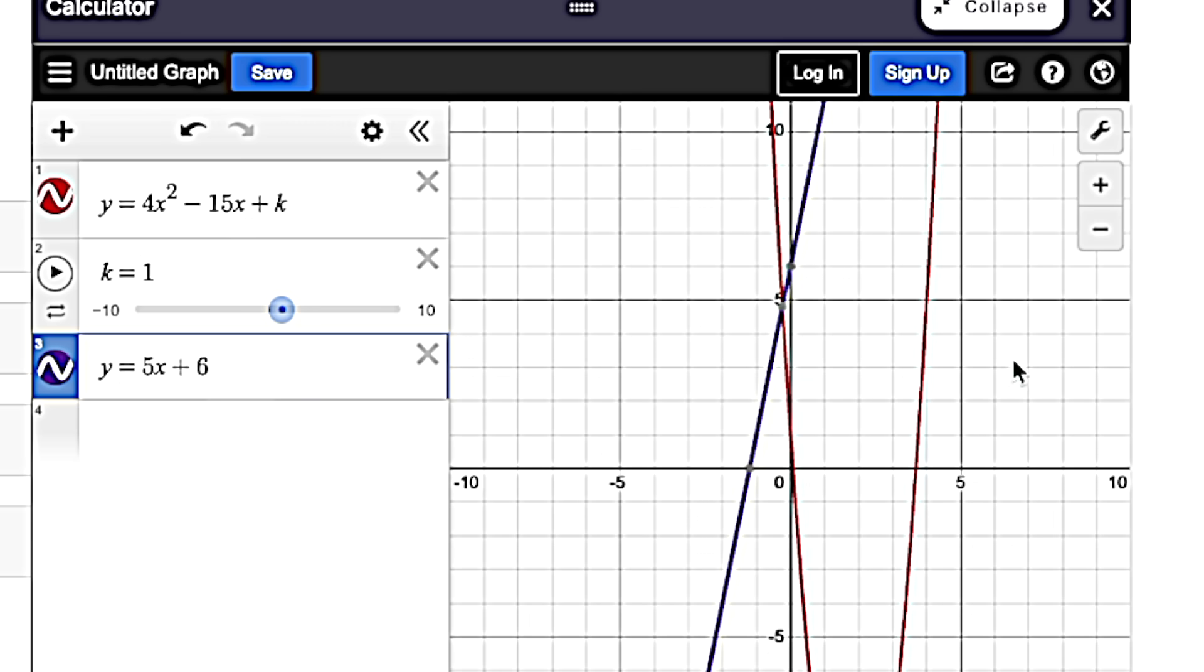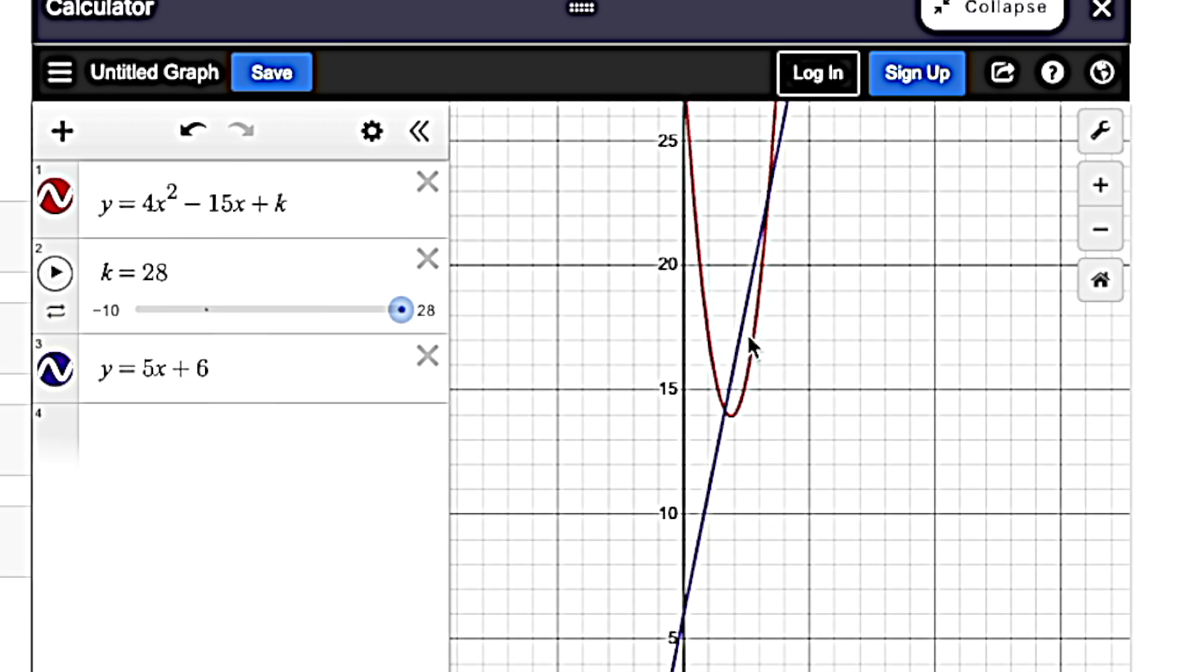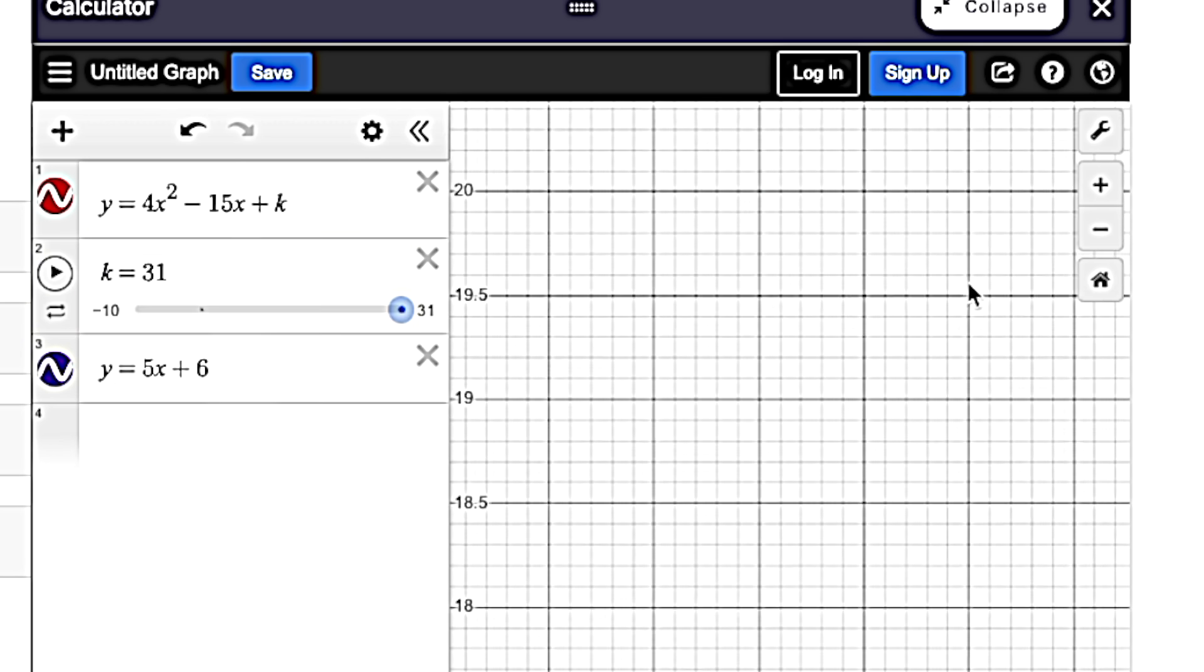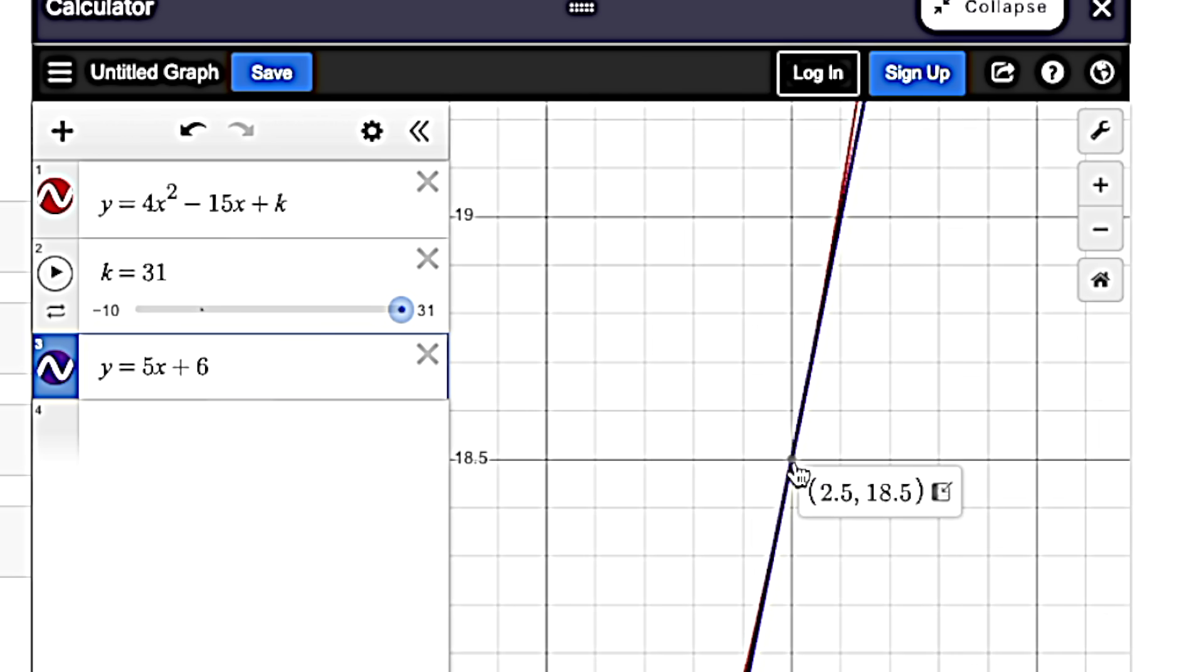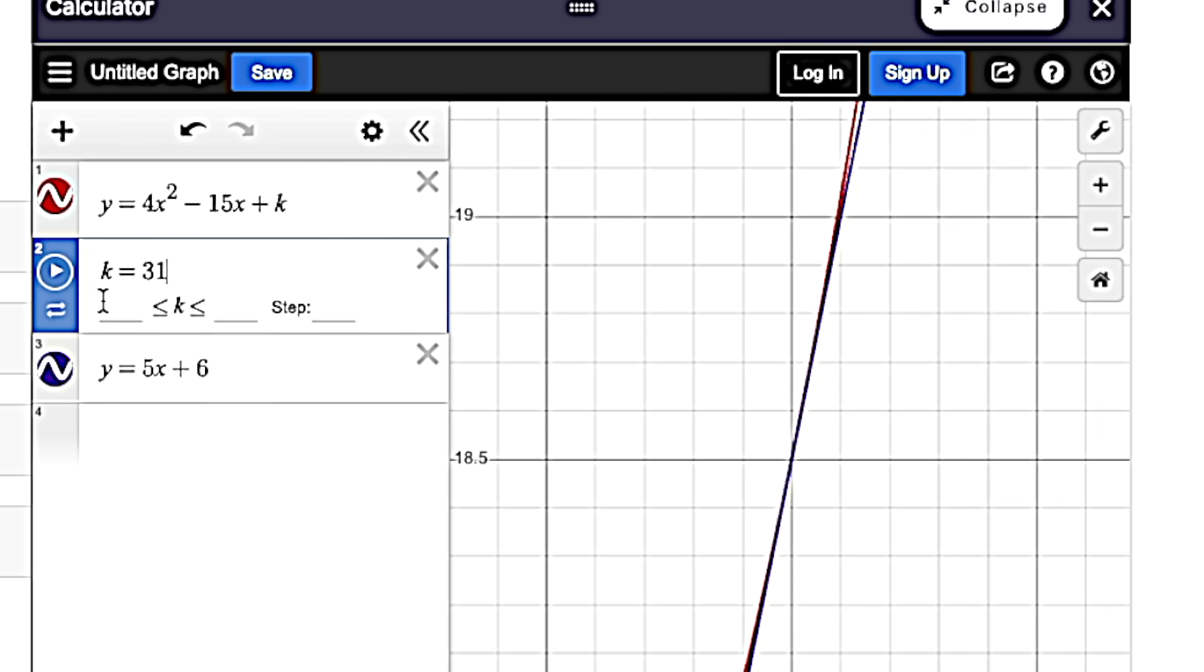And since we want one solution, we need to plug in our answer choices for k. And then visually, we will see when there's only one solution. So if we put in 28, you can see that we have two solutions still. 30 doesn't work. 31 is looking like we only have one solution. Zoom in there. And yeah, sure enough. Boom. Only one solution right there. So just remember, you got to use that slider.